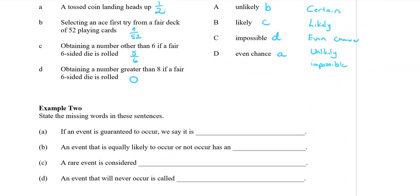Question two: state the missing words in these sentences using the list of terms. If an event is guaranteed to occur, we say that it is certain. If an event is equally likely to occur or not occur, it is an even chance.